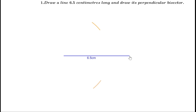Now, put the compass at the other end without changing the radius and draw arcs on both sides of the line. Mark the points of intersection and join them. This line is the perpendicular bisector of the line of length 6.5 cm.